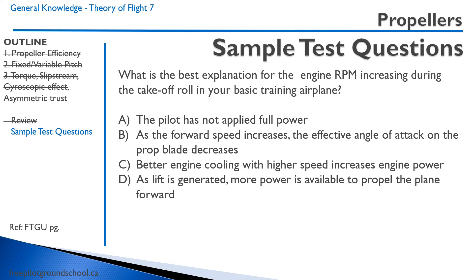Practice question: What is the best explanation for engine RPM increasing during the takeoff roll in a basic training airplane? Option A: the pilot has not applied full power — not correct. Option B: as forward speed increases, the effective angle of attack on the blade decreases — this is true. Option C: better engine cooling increases power — negligible effect. Option D: as lift is generated, more power is available — not true. The correct answer is B.